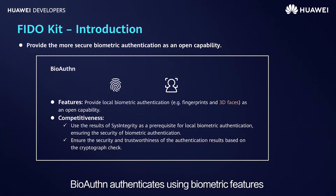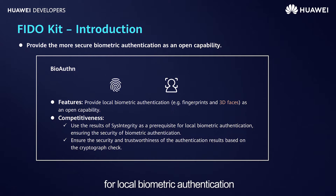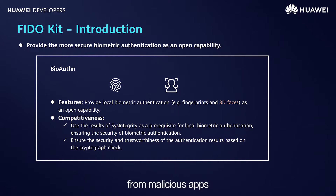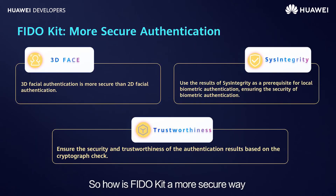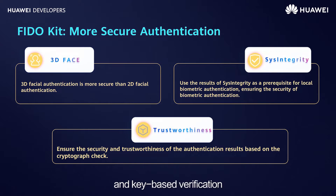BioAuthn authenticates using biometric features such as fingerprints and 3D faces. FiddleKit uses the results of the system integrated check as the prerequisite for local biometric authentication. It first checks the system for any apps with higher priority or permission to make biometric authentication more secure and prevent attacks from malicious apps. Key-based verification is another layer of reliability. FiddleKit features 3D instead of 2D facial recognition, coupled with a system integrated check and key-based verification.